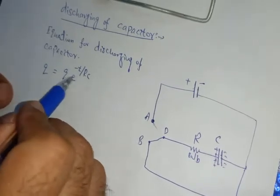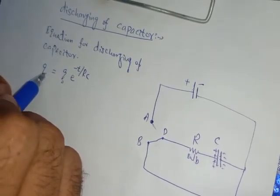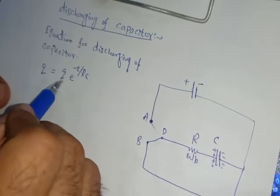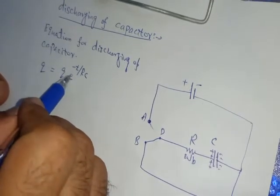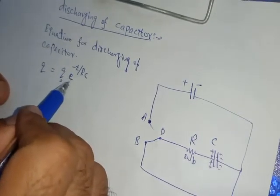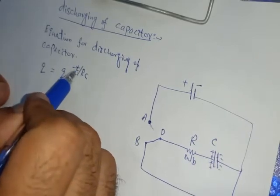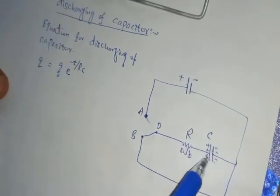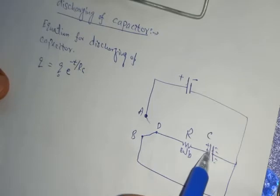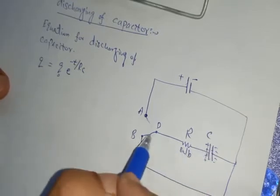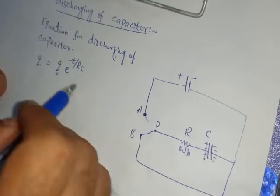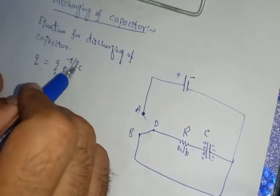Now you will have known the parameters involved in this equation. Q shows us the instantaneous charge, Q naught shows the maximum amount of charge, E is just a mathematical constant called eccentricity, T is the time span, that is the time taken by the capacitor to get discharged, and RC is time constant.